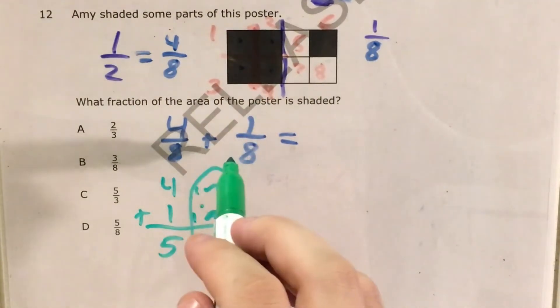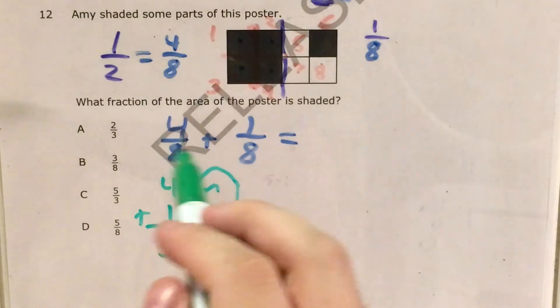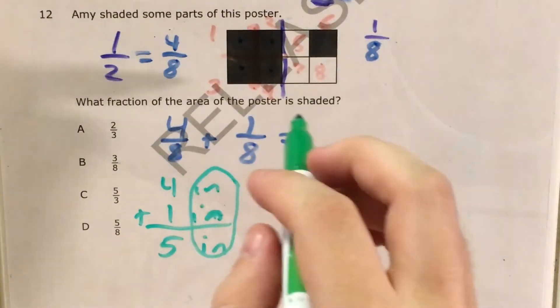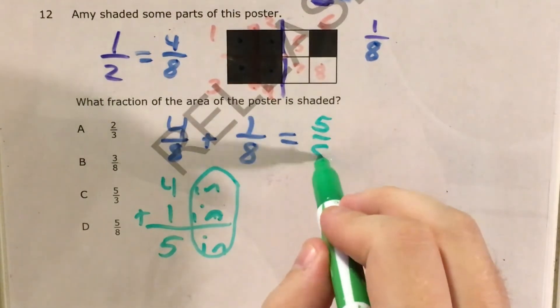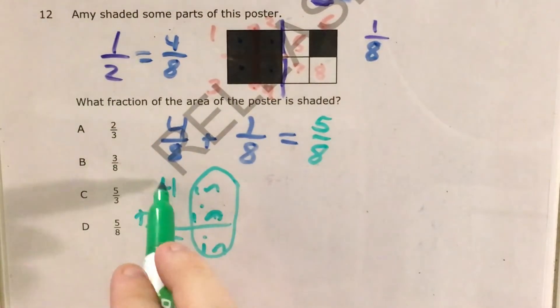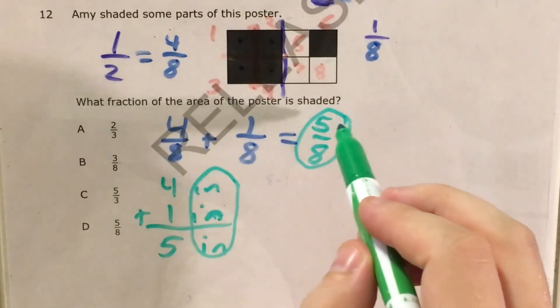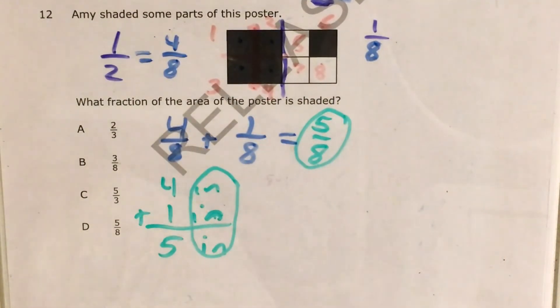And whenever we look at fractions, it's very easy and very helpful to think of our denominator as something that we're using to measure. So four eighths plus one eighth, four plus one is five and that's still eighths. Just like four inches plus one inch equals five inches. So I got five eighths from this problem and that matches my answer of D. So there we go. D is my answer.